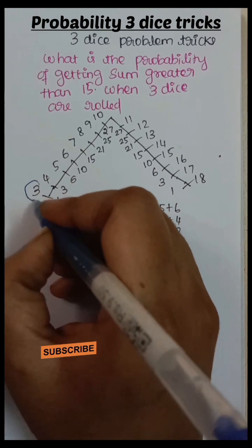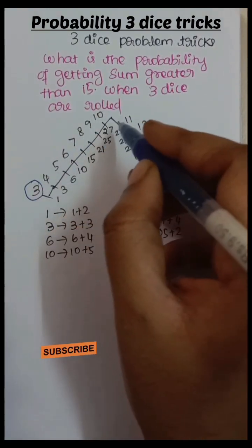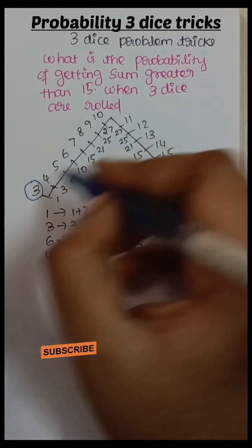When 3 dice are rolled, minimum sum obtained is 3, maximum sum obtained is 18. So arrange 8 numbers here. Arrange 8 numbers in opposite side of the triangle.